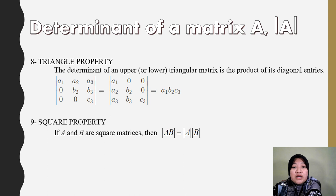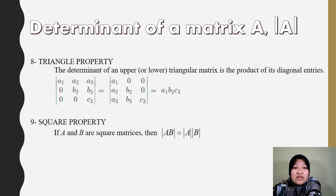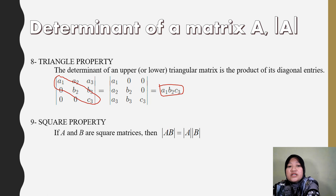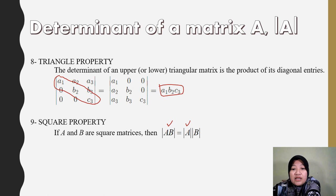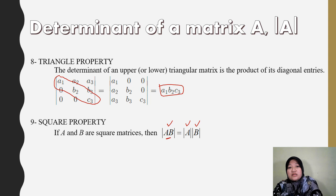Triangle property: for a lower or upper triangular matrix, the determinant equals the product of the diagonal elements — no need to use the full formula, just multiply the diagonal. Product property: det(AB) = det(A) times det(B). So you can find each determinant separately and multiply, without computing the matrix product AB first. Those are the nine properties of determinants.